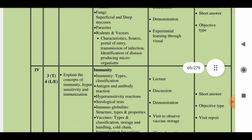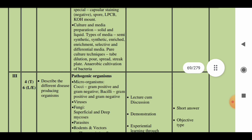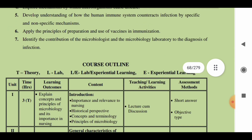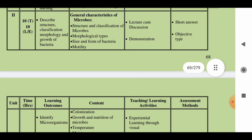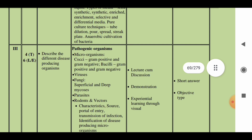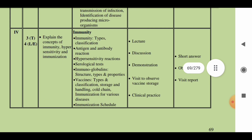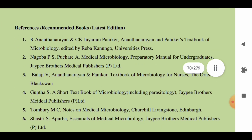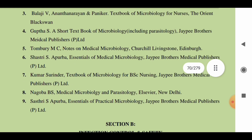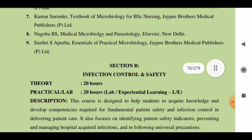You have a total of 4 units. In the first unit you will learn about the introduction. In the second unit you will learn about the general microbial characteristics of microbes. In the third unit you will learn about pathogenic organisms, and in the fourth unit you will learn about immunity. The recommended books for microbiology are Ananda Narayanan, Nagoba, Balaji, and Guptayas. You can also use any other book prescribed by your teacher.